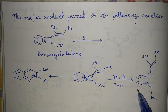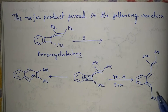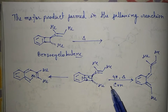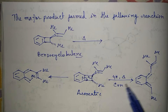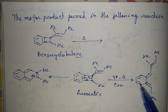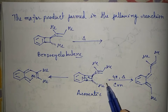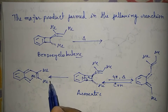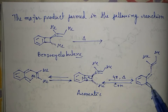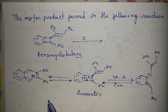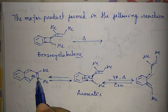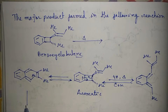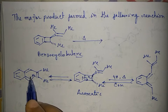Between these two products, the one with trans configuration is more stable. However, this is an aromatic compound, and on undergoing ring opening the aromaticity is destabilized, so the equilibrium of this reaction will be towards the left. The formation of the trans product will be much faster than the cis product. In heating conditions, a six-membered ring closing reaction is possible.